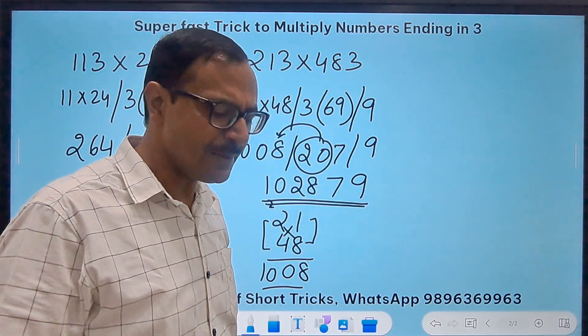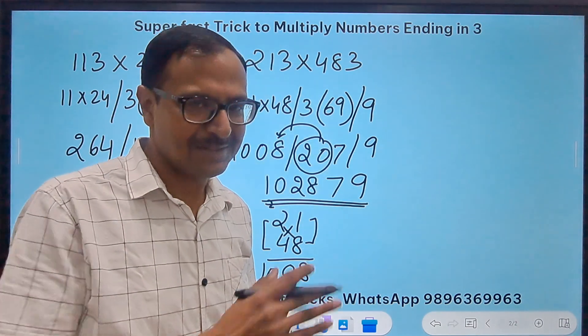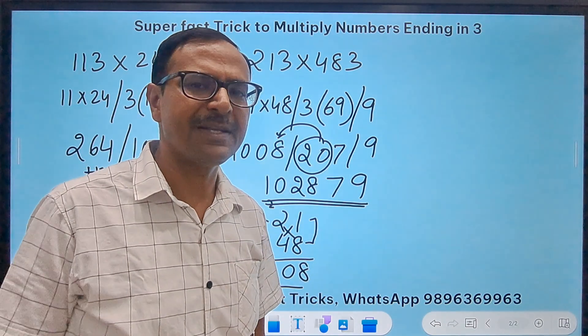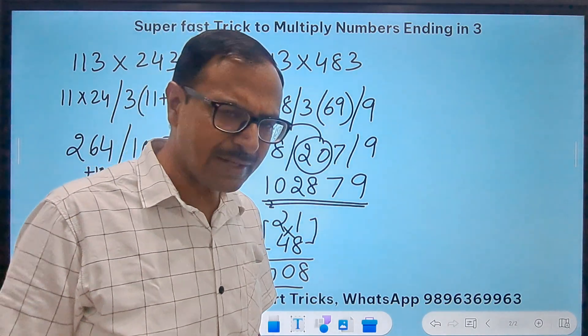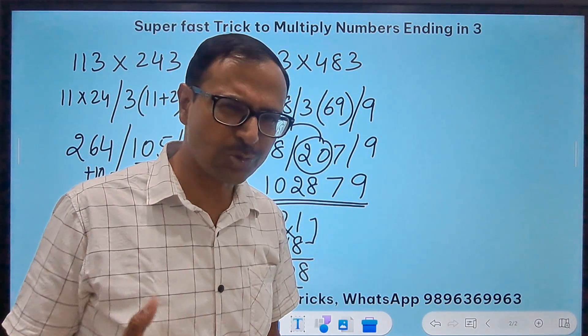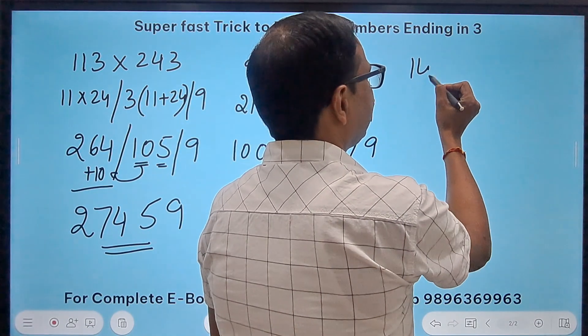See, some of the previous methods which I have used are being used here, the vertical and crosswise and the similar methods of multiplication of two digit numbers. Should I give you a DIY or should I do it myself? Okay, let's do one more.